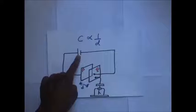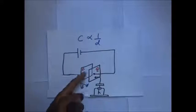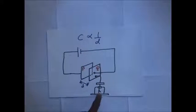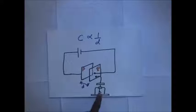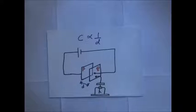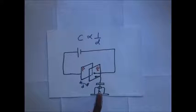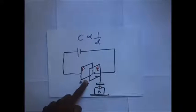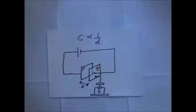We shall use this illustration — we have a source of PD, two plates called plate P and plate Q. Plate P is connected to a gold leaf electroscope, which will serve as a measure to tell us whether the capacitance is increasing or decreasing. If the charge on this plate increases, shown by divergence of the gold leaf electroscope, it means capacitance has also increased and vice versa. D shows the distance of separation between the two plates.